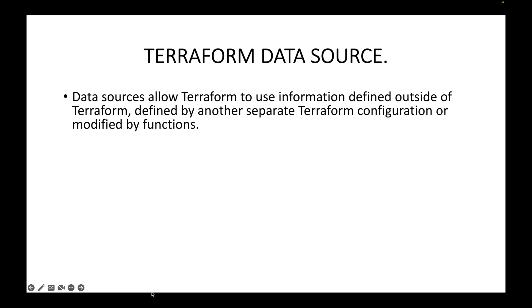Data sources allow Terraform to use information which was not defined as part of your Terraform configuration file — rather, it was defined by some other Terraform configuration or modified by a function. Basically, whatever configuration files you are writing, if the information is not defined there but was defined by some other code or is already available and you want to fetch it, then you can make use of Terraform data sources.